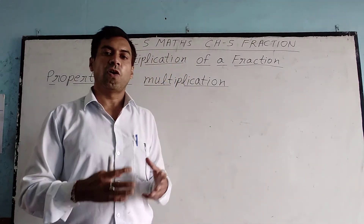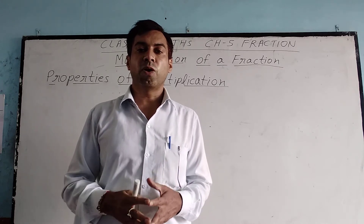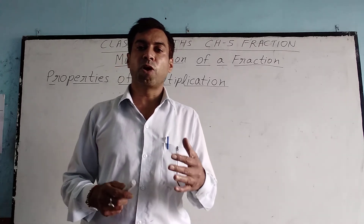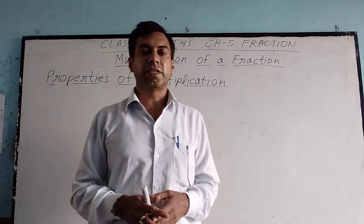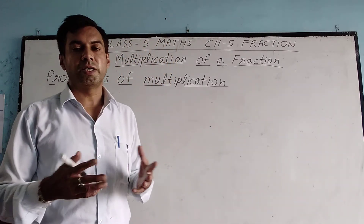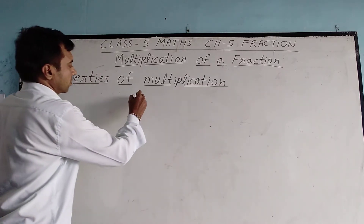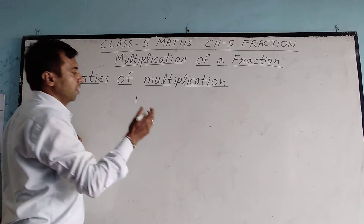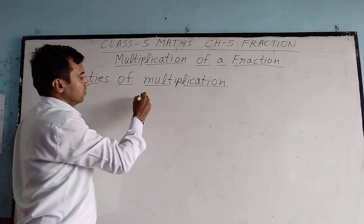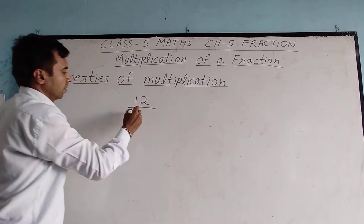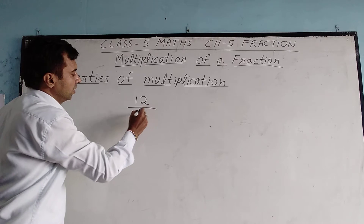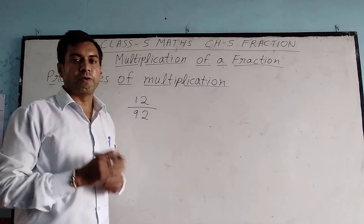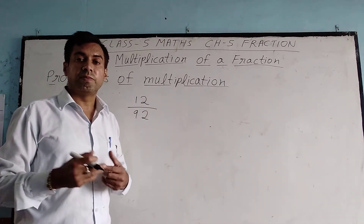Now, reciprocal of a proper fraction. The reciprocal or multiplicative inverse of a proper fraction is an improper fraction. A proper fraction is one where the numerator is less than the denominator. For example, 12 by 92 is a proper fraction.